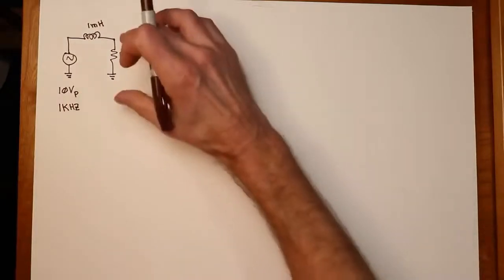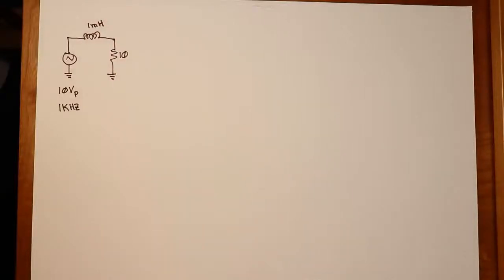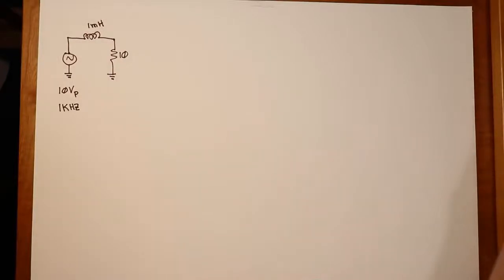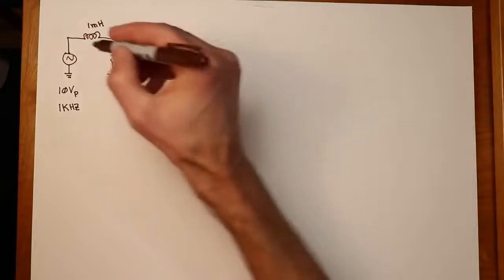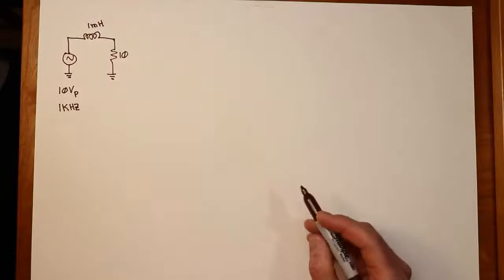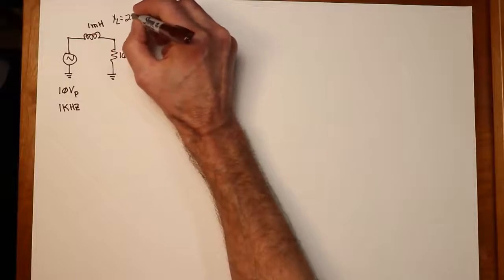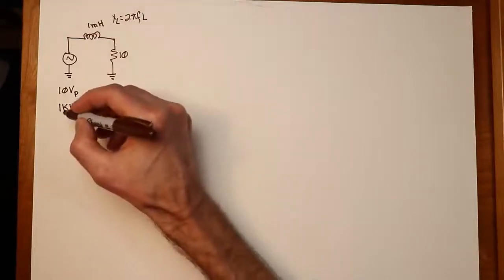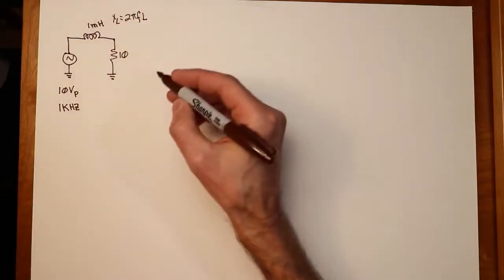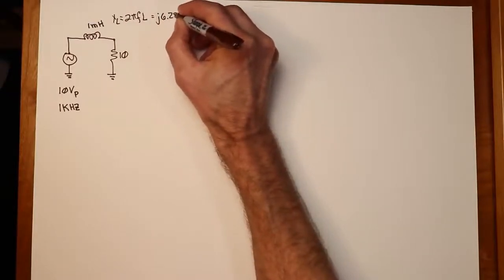And what we would like to do is determine the true power dissipated in the circuit, the apparent power, the reactive power, figure out the power factor, and also draw the power triangle for the circuit. So the very first thing we have to do here is turn that inductance value into a reactance value. So we can just use our straight formula where X_L is equal to 2πfL. Put in 1 kilohertz and 1 millihenry. The millihenry and the kilohertz, the millis and k's cancel, and we're left with just 6.283 ohms.